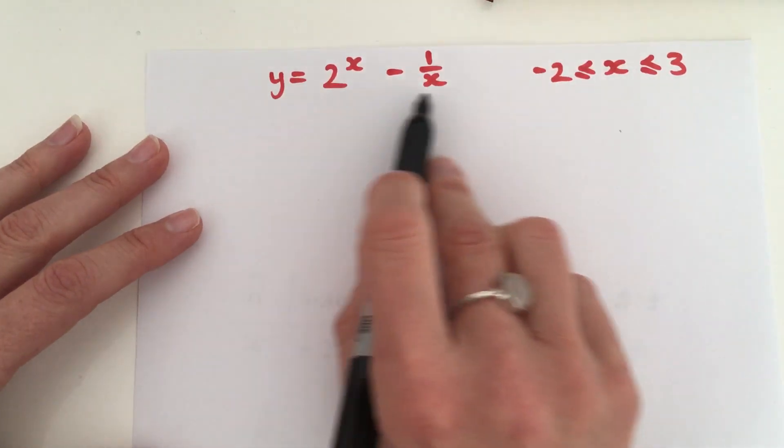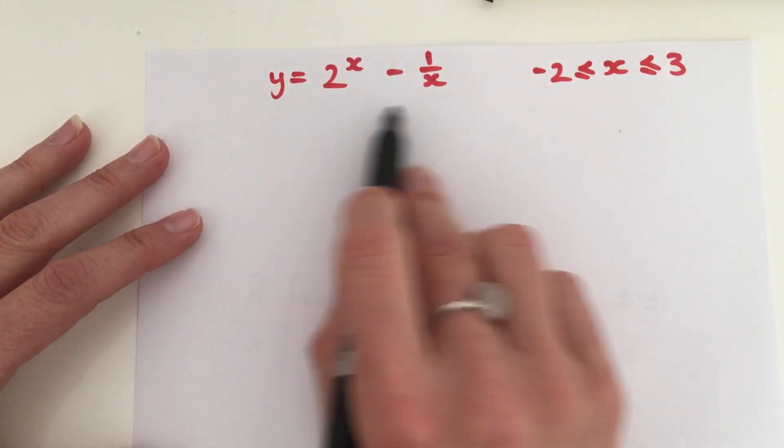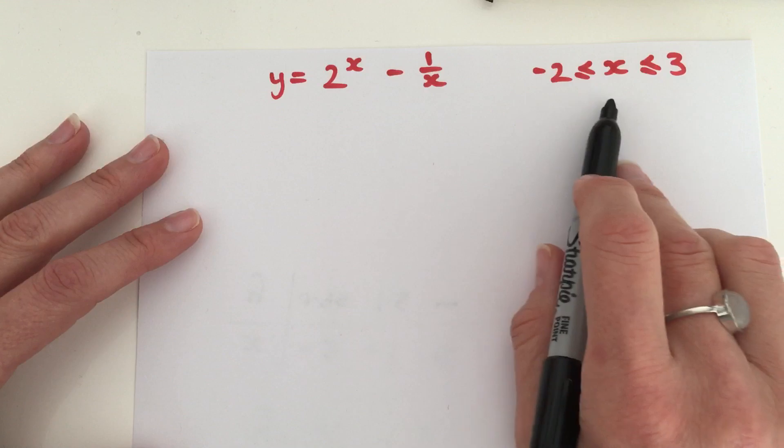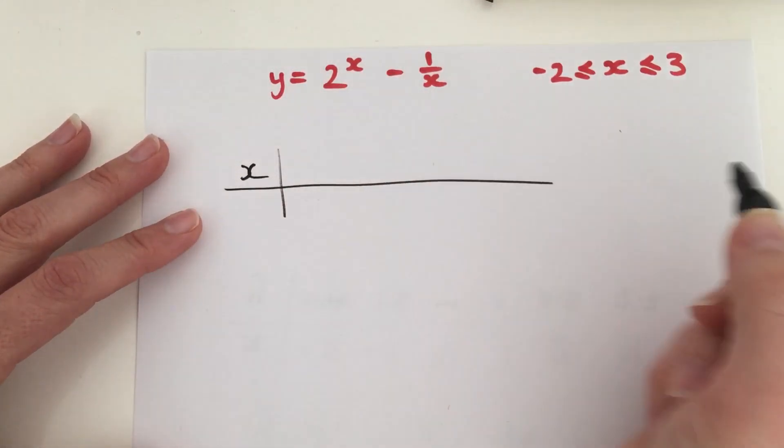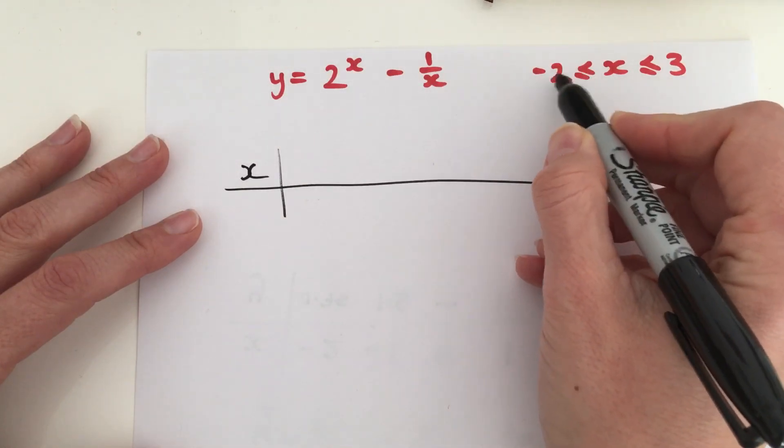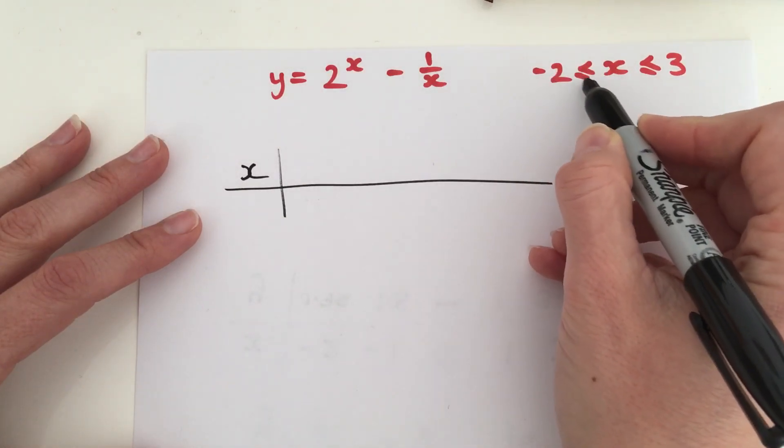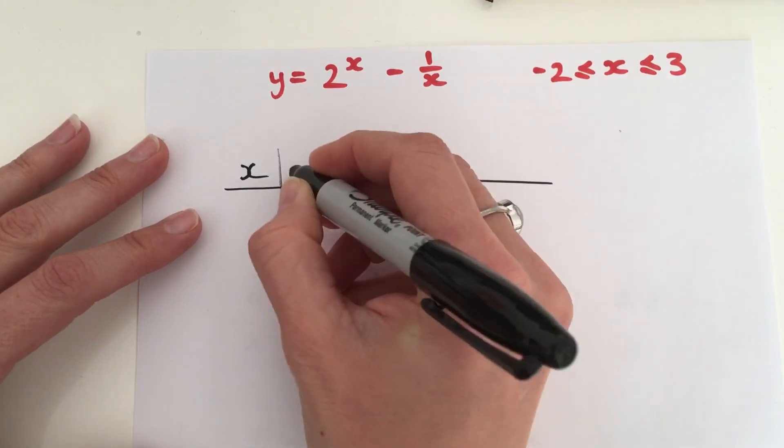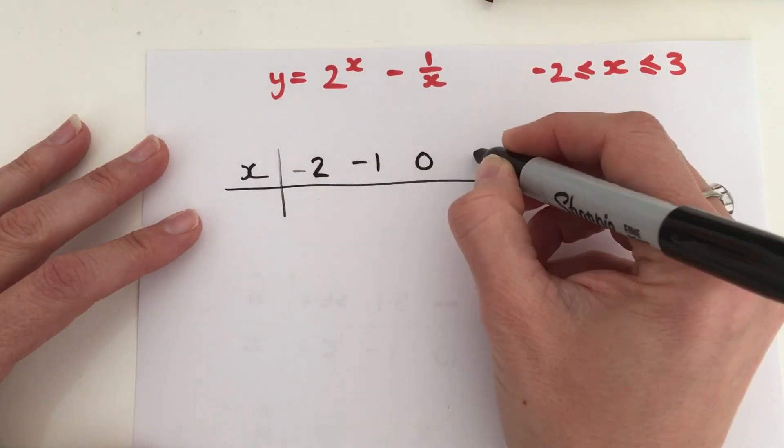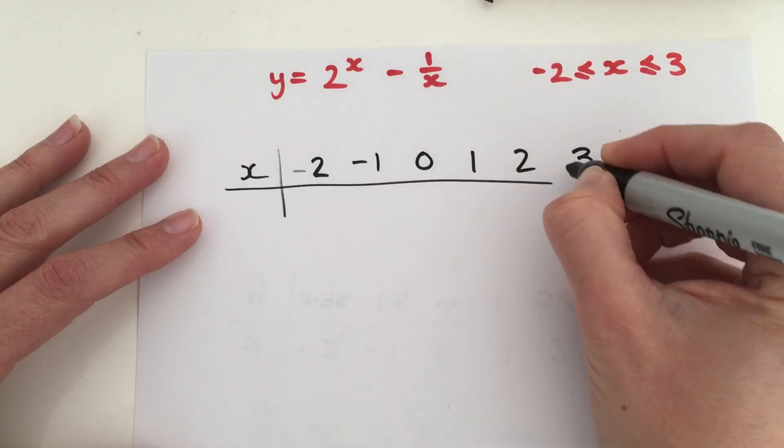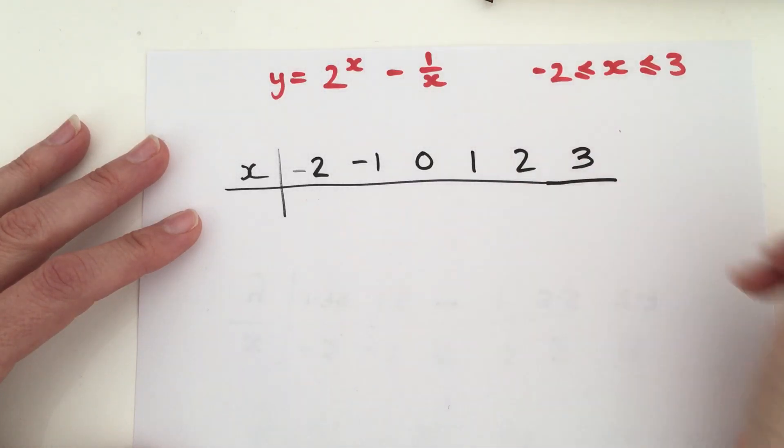So, we want to create a table of values for this equation, and it needs to be between these two values. In reality, we want a table of values starting at minus 2 because we have the inequality sign with this line underneath, which means that we are including the number minus 2, up to the number 3, and including 3.